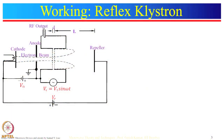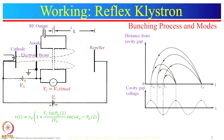This is how oscillations are sustained in the reflex klystron by the to-and-fro movement of electrons from the cavity to the repeller space. Now let us see the bunching process and the modes of reflex klystron. The vertical axis represents the distance from the cavity gap towards the repeller plate, and the horizontal axis represents the time taken by electrons moving in the repeller space. These curves represent the path of movement of electrons in the repeller space.